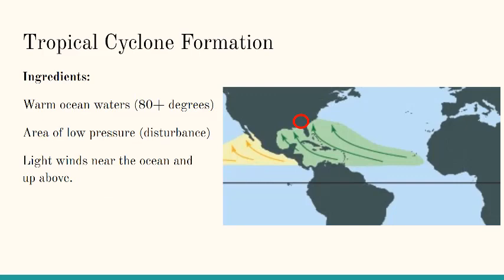In the picture on the right, the southeast U.S. is where the red circle is. The green arrows show where tropical cyclones form and move. Sometimes they form off the west coast of Africa and move west. Sometimes they form in the Caribbean Sea or the Gulf of Mexico and move to the west, northwest, or north. The winds carry these storms in the direction they are blowing. In order for a tropical cyclone to develop, we need warm ocean waters of at least 80 degrees or higher, an area of low pressure often called a disturbance — which usually begins as a cluster of thunderstorms — and light winds near the ocean and up above in the atmosphere.